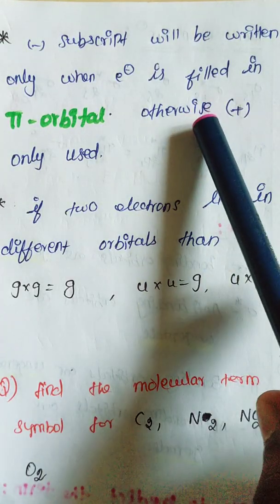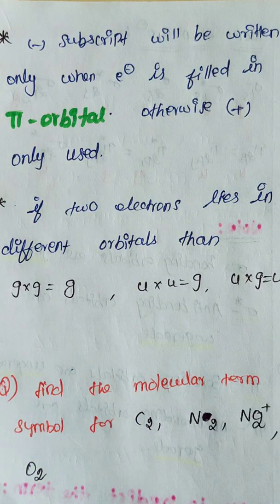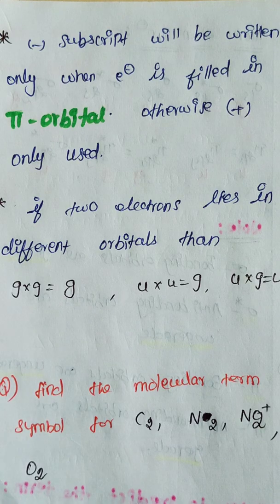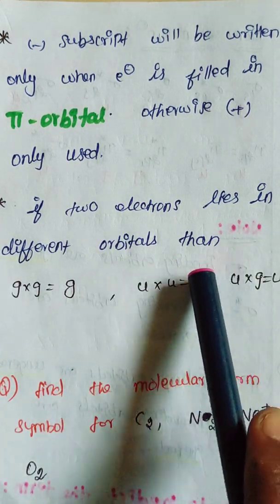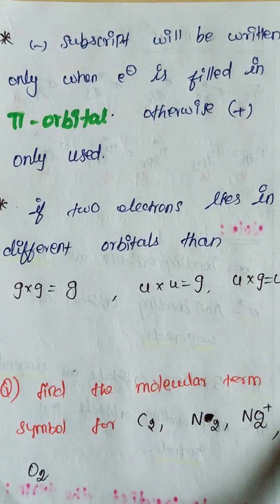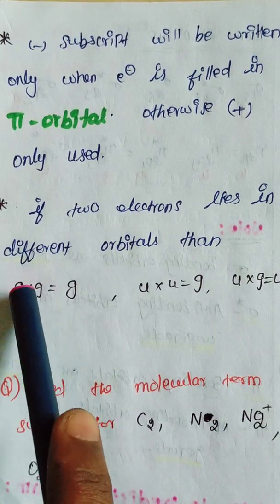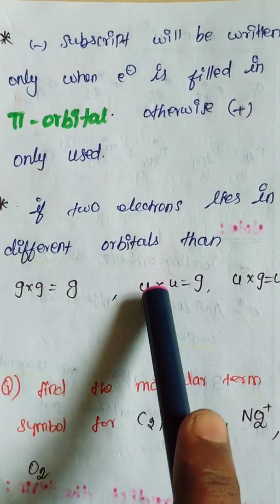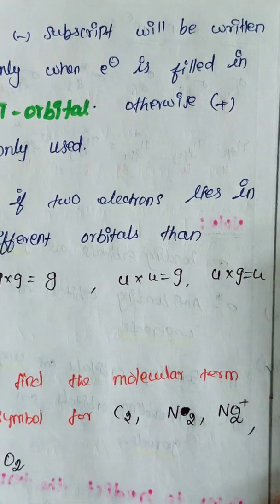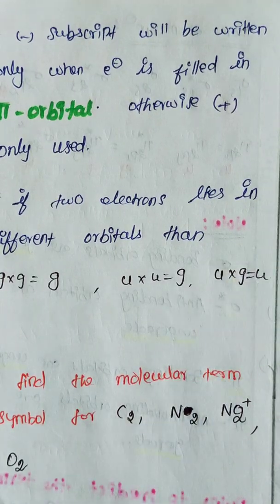For the plus/minus superscript: the minus superscript is written only when the last electron is filled in a pi orbital — otherwise plus is used. If two electrons lie in different pi orbitals — pi 2px and pi 2py — and one is the last electron, this gives us ungerade and ungerade. Ungerade multiplied by ungerade gives gerade. And ungerade multiplied by gerade gives ungerade.